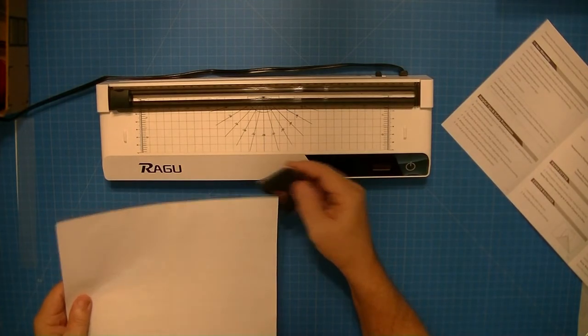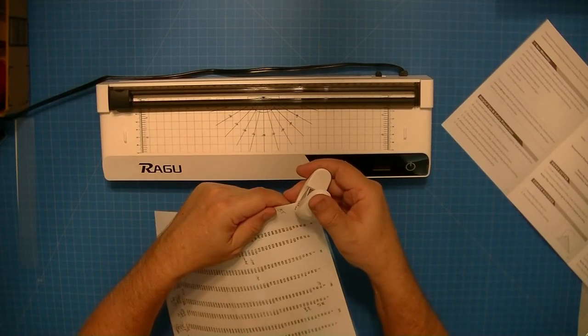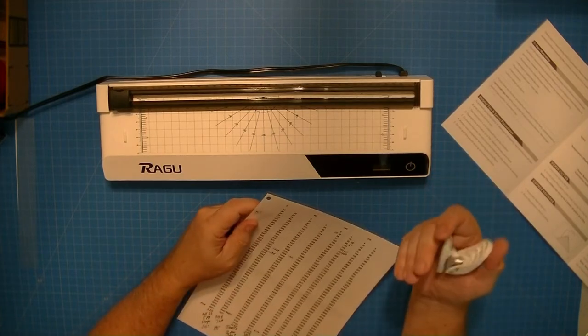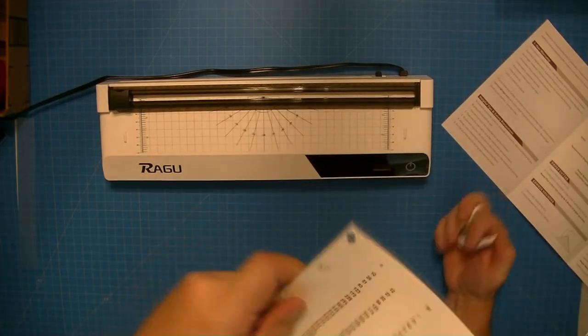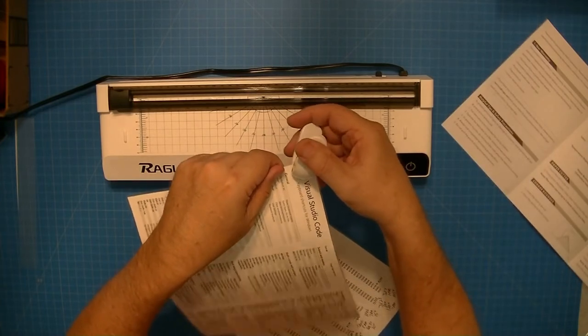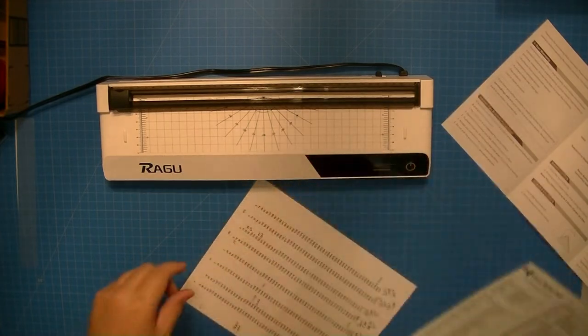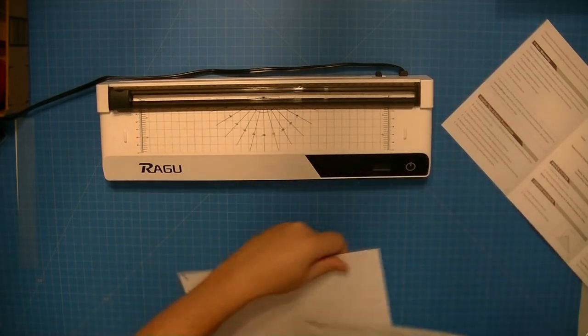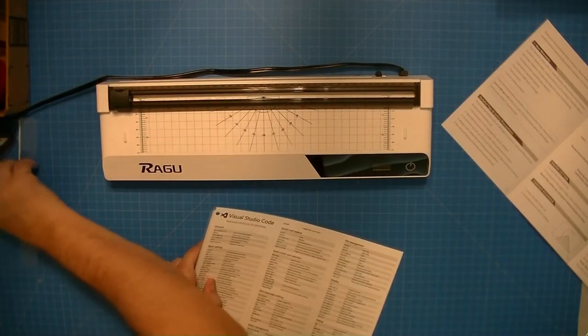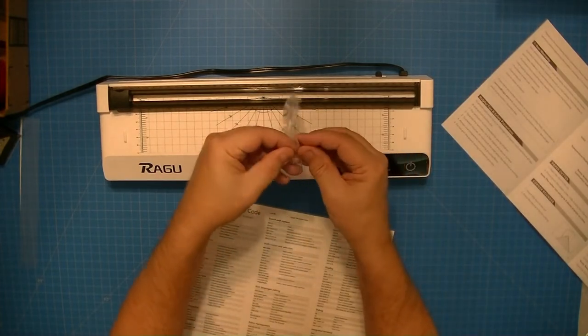All right, well that does it for that little toy. Time to move on to the hole punch. So here I'm going to take this hole punch that came with the laminator and I'm going to punch a hole into both of my laminated sheets here. We'll go ahead and punch the other one. This is for my programming sheet.